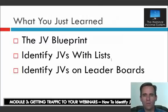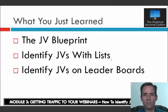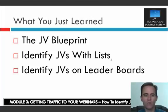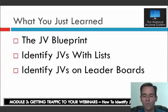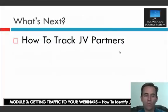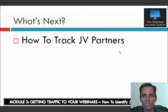After you've found information from leaderboards and newsletters, I'm going to show you the best way to track it so you can start contacting these people. So what did you just learn? We talked about the JV blueprint, we identified JVs with lists, we identified JVs with leaderboards, and next we'll cover how to track those JV partners. See you on the next video.